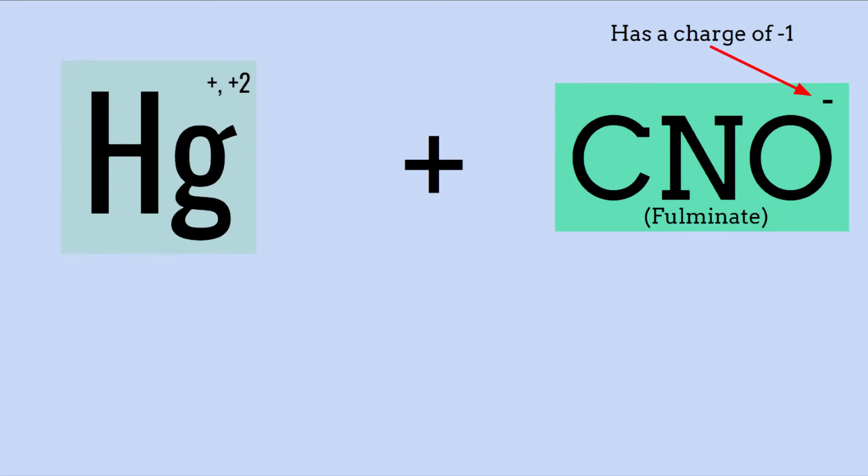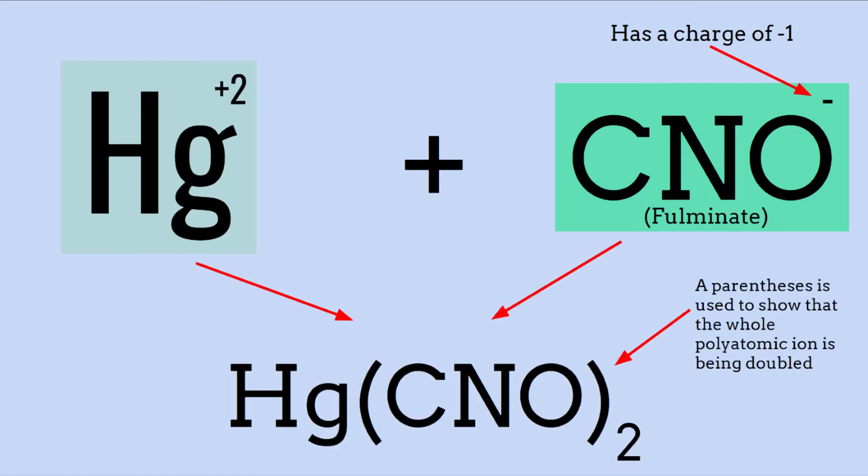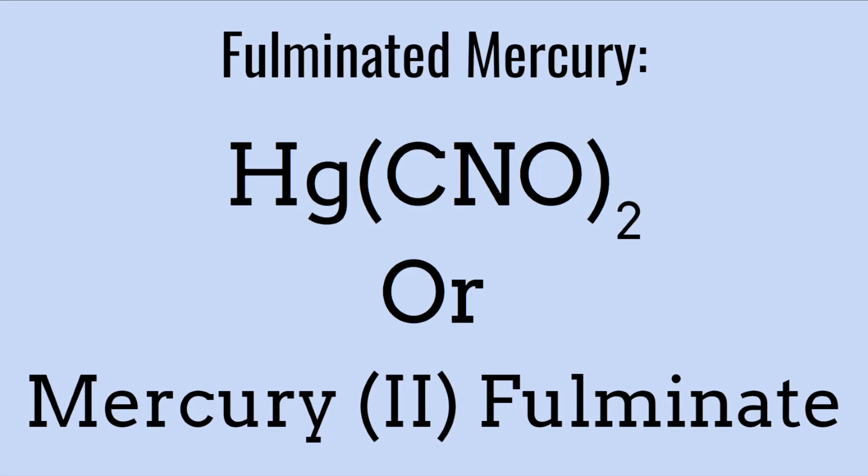Just like we did before, we need to balance these charges. Mercury is also a transition metal with two common charges, plus one and plus two. In this case, plus two is the one that bonds with fulminate. So fulminate and mercury would come to look like this, because we would need two fulminate ions to even out the charges.